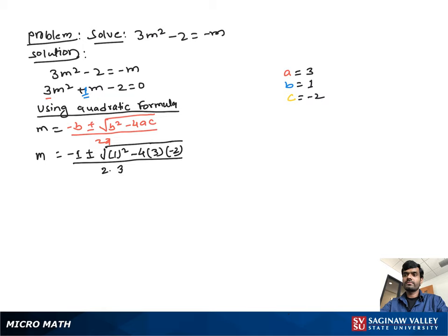Now m equal to negative 1 plus or minus square root of 1 squared which is 1, and since minus times minus is plus, 4 times 3 times 2 equals 24, so we have 1 plus 24, all over 2 times 3 which is 6.